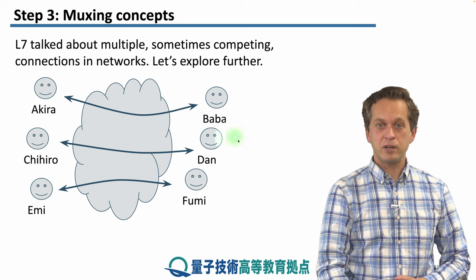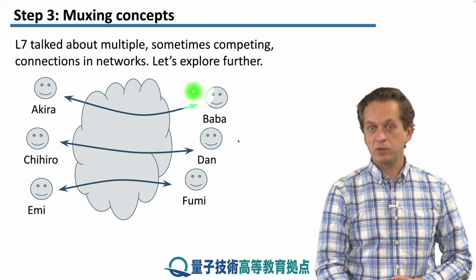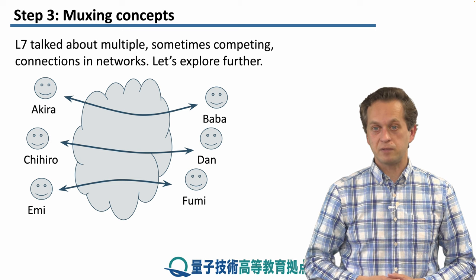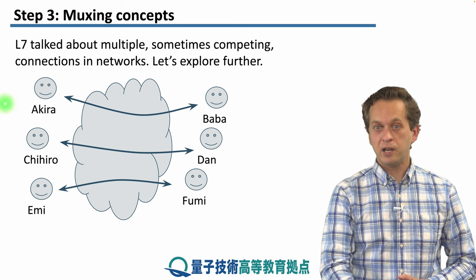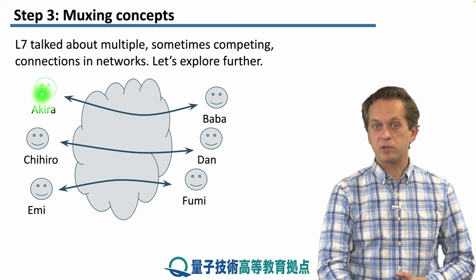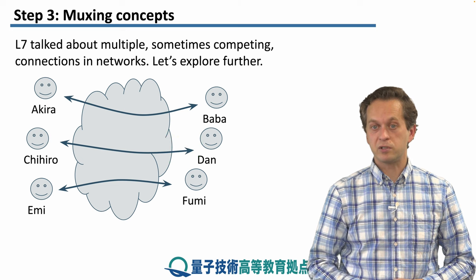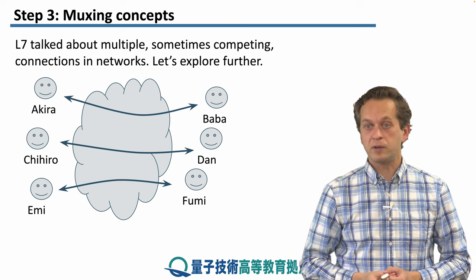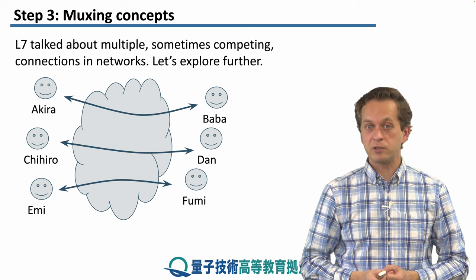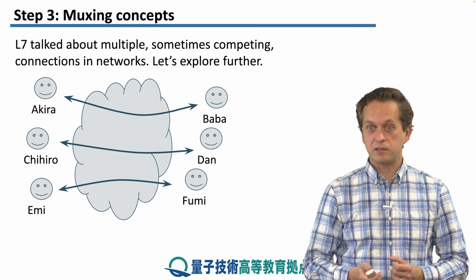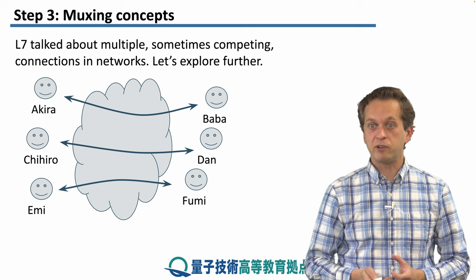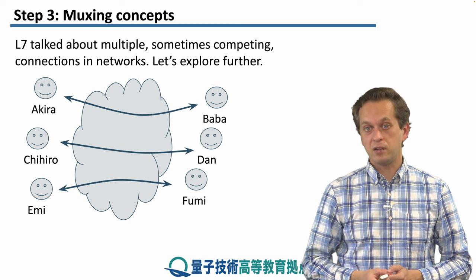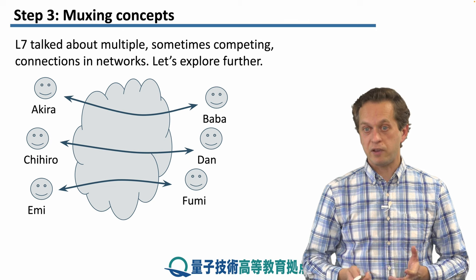The basic situation we have in mind is a network with multiple users that are trying to establish connections. There are no dedicated connections between each possible combination of those users, so the users must make use of the network resources in a simultaneous way. The network has to figure out how to share those resources and satisfy the needs of those users in a fair way.